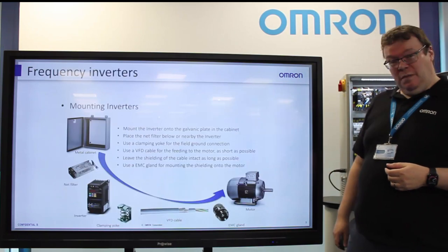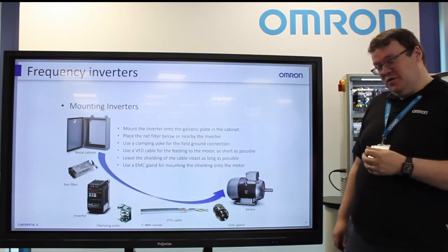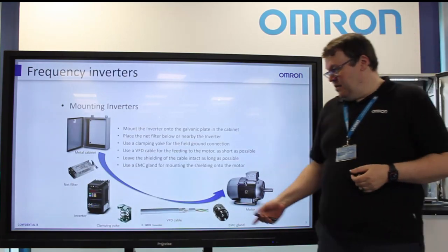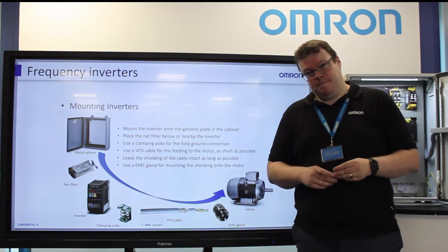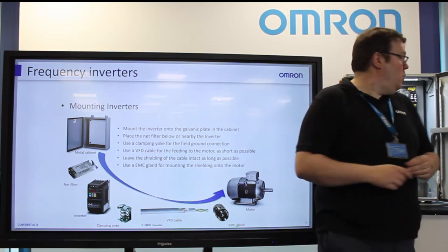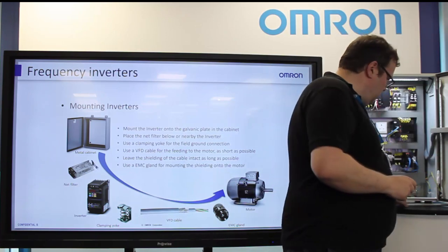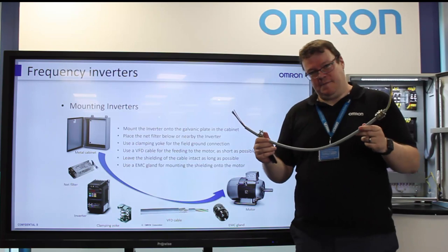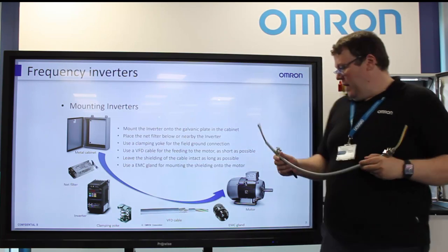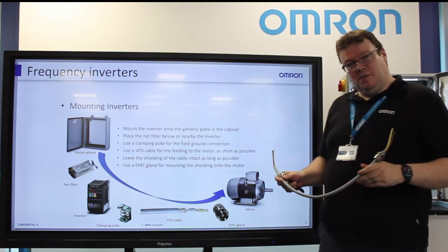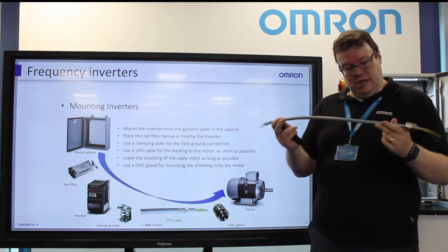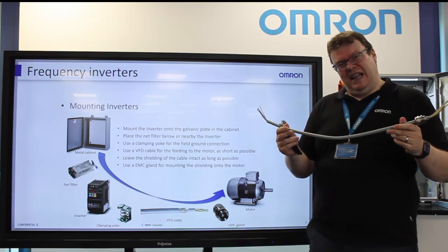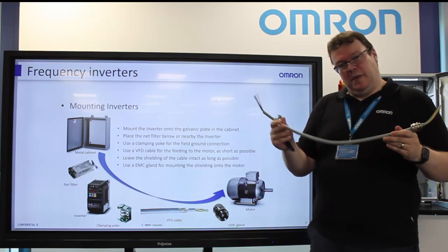A typical problem we come across in control panels where this is an influence is when we have an inverter-driven motor. In one of the old tech talks, we speak about the importance of proper shielding and gland entry. When we have harmonic noise, we want that to return to the inverter — usually, if possible, through the shielding on the cable.